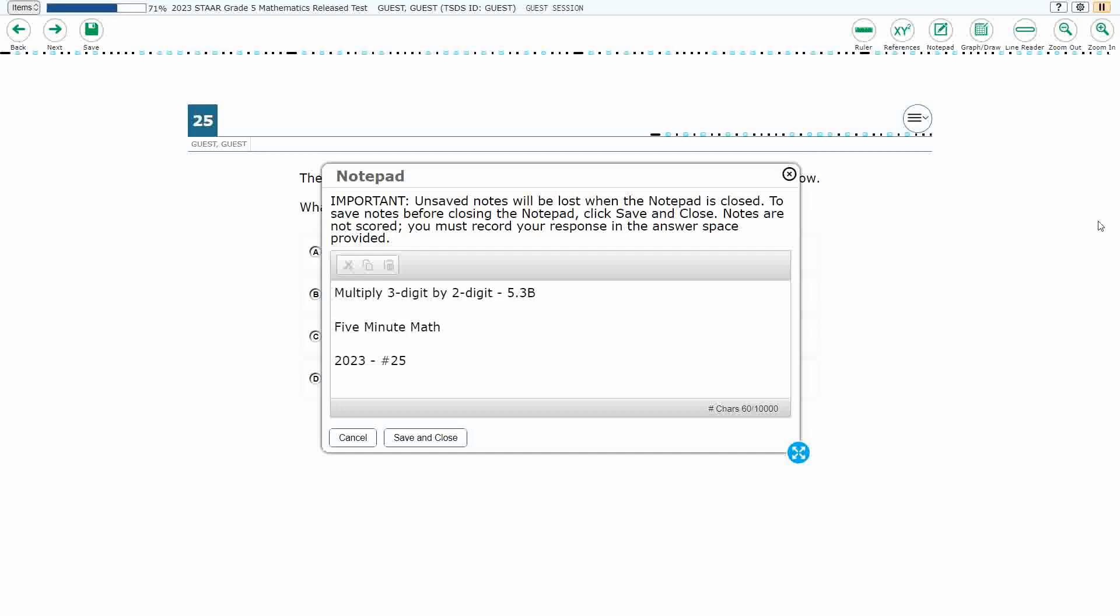Hello and welcome to 5-Minute Math. Today we are looking at the fifth grade concept of multiplying two-digit by three-digit numbers. This is standard 5.3b in the great state of Texas.